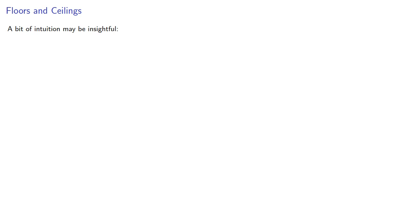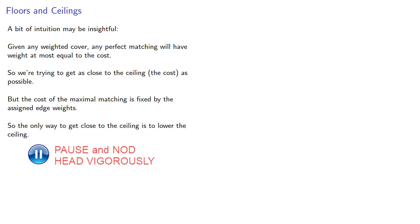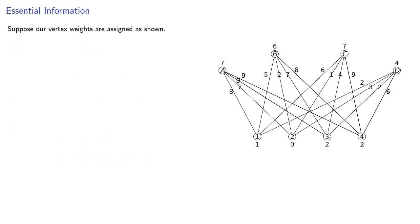So a bit of intuition might be insightful. That's actually kind of the whole point of intuition. Given a weighted cover, any perfect matching will have weight at most equal to the cost. So we're trying to get as close to the ceiling, the cost, as possible. But the cost of the maximal matching is going to be fixed by the assigned edge weights. So the only way to get close to the ceiling is to lower the ceiling.